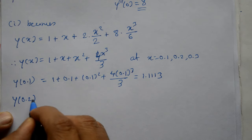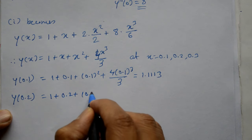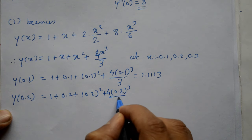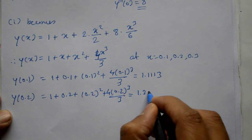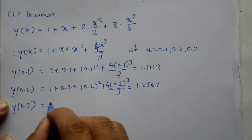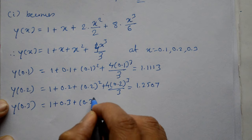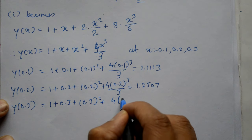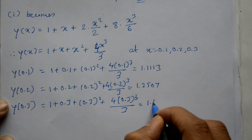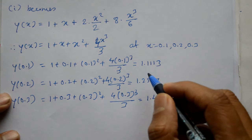Take x = 0.3: y(0.3) = 1 + 0.3 + (0.3)² + 4·(0.3)³/3 = 1.426. x values 0.1, 0.2, 0.3 daala hai, toh alag alag answer aayenge.